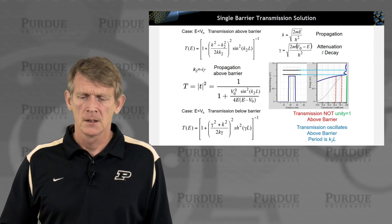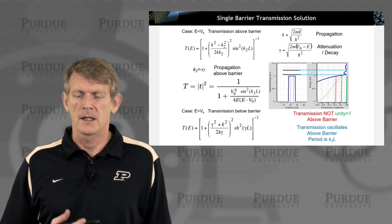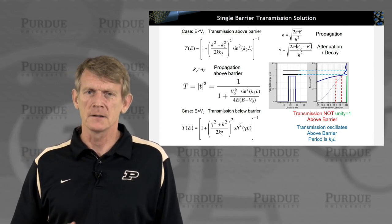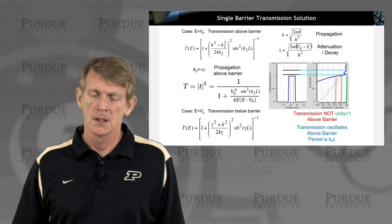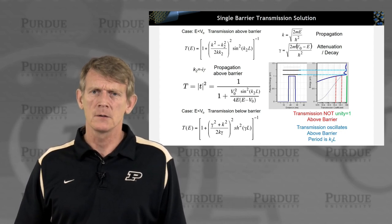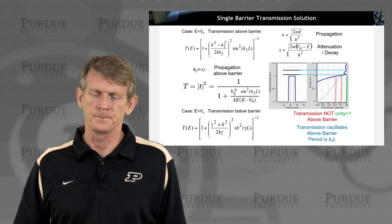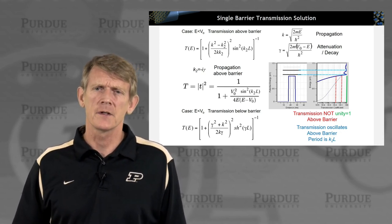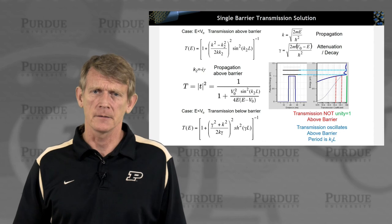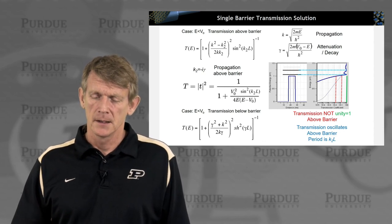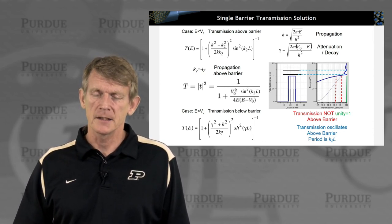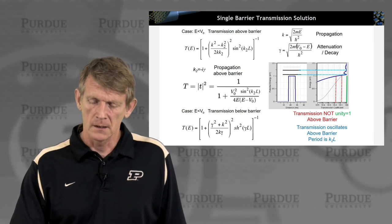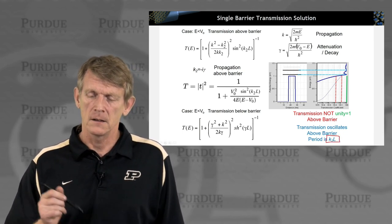As I've shown before, the decay under the barrier is much stronger, but you also see multiple peaks in the transmission. There are oscillations of the transmission above the barrier, and these are related to the length L of the barrier.